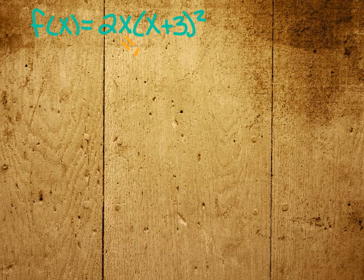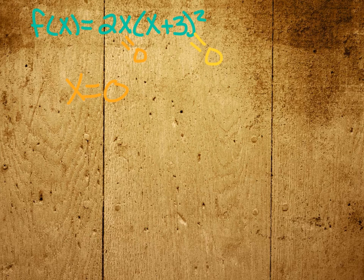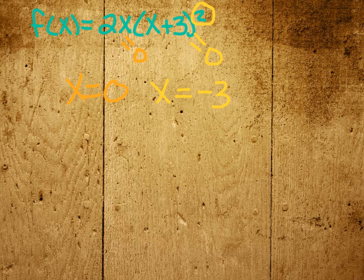So if I set 2x equal to zero, I get x equals zero. And if I set that factor equal to zero, I get x equals negative 3. And there's something special about this one. Because it's squared, it's actually in there twice.